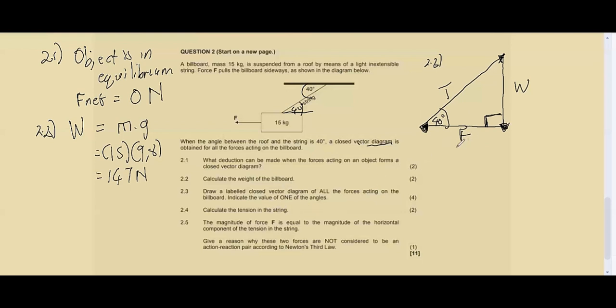Question 2.4 says calculate the tension in the string. We already know that when you have a closed vector diagram, the way you calculate any of the sides is by using SOH CAH TOA. Always know that it's the trend of the questions: they make you draw a closed vector diagram, then below they say calculate either the tension or the force, then you use your trig ratios using SOH CAH TOA.